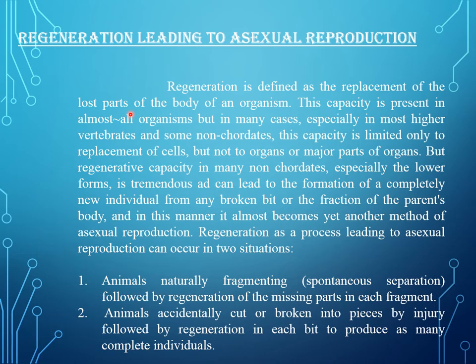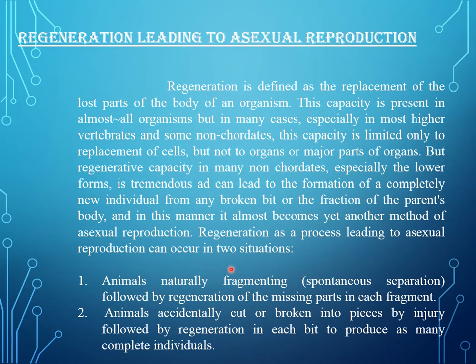Regeneration is defined as the replacement of the lost part of the body of an organism. This capacity is present in almost all organisms, but in many cases, especially in most higher animals and some non-coordates, this capacity is limited only to replacement of cells but not to organs. But regenerative capacity in many non-coordates, especially the lower forms, is tremendous and can lead to the formation of a completely new individual from any broken bit or fraction of the parent's body. Regeneration leading to asexual reproduction can occur in two situations: first, the animal naturally fragmenting by spontaneous separation followed by regeneration of the missing part; second, the animal accidentally cut and broken into pieces by injury, followed by regeneration in each bit.